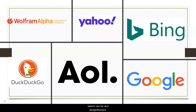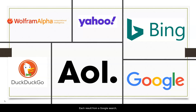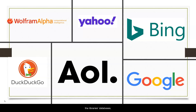We all know that doing a web search can be very straightforward. Type in a sentence, a phrase, a word or two, and you get millions of results, right? Each result from a Google search, for example, will have varying degrees of relevance and credibility, whereas when you search in the library's databases, you can be sure your results are much more credible.